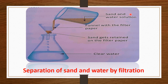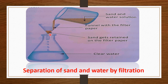In filtration, a solution containing insoluble substances — like sand mixed in water — is passed through a filter paper. The liquid passes through the filter paper while the insoluble substance, which is sand, is retained on the filter paper. So the sand and water are separated this way. You can also try this at home using a thin cloth or a strainer if you don't have filter paper.